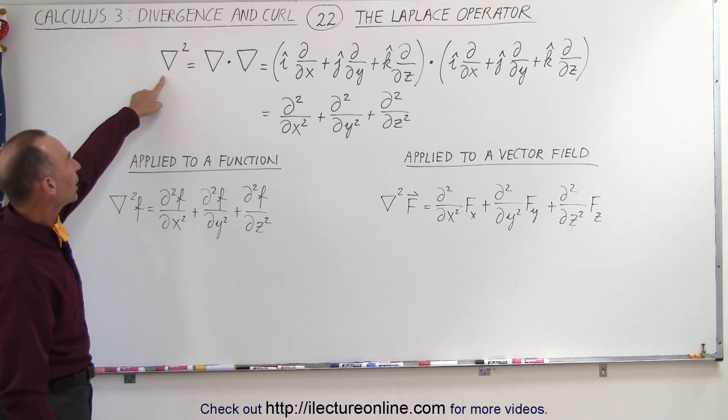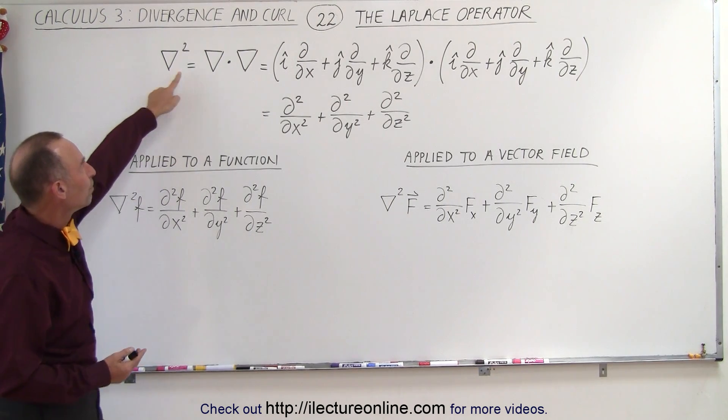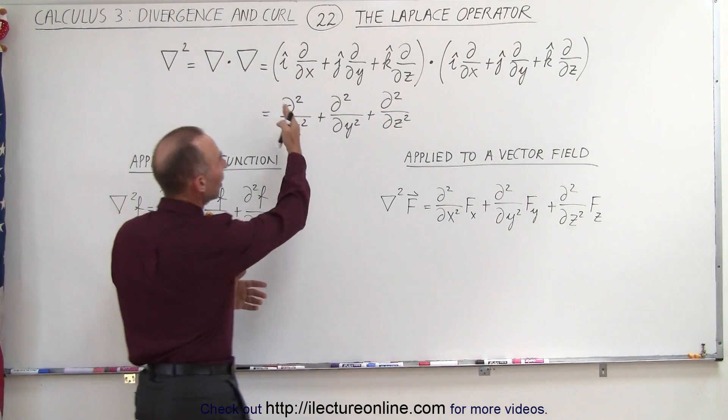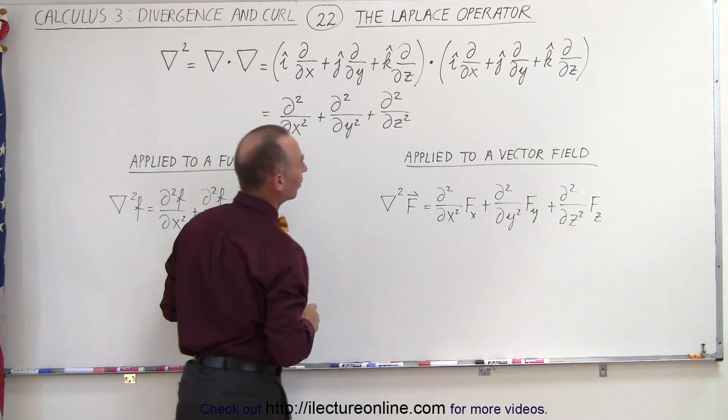If we take the del operator and square it, in essence we're multiplying it by itself via the dot product. When we write out what the del operator looks like and put in the dot product,